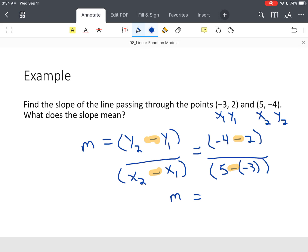So the slope of this particular line: negative four minus two is negative six, five minus a negative three, which makes that a positive three, which makes this eight.